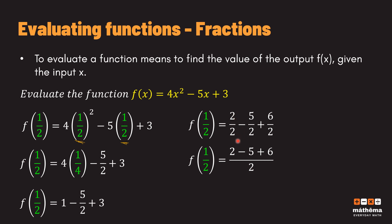Since the denominators are now like fractions, we can simply perform the operations on the numerator side. We have 2/2 minus 5/2 plus 6/2, which gives us (2 minus 5 plus 6) over 2. Two minus five is negative three, and negative three plus six is positive three. Therefore, f(1/2) is equal to 3/2.